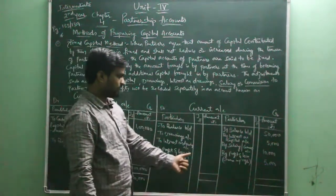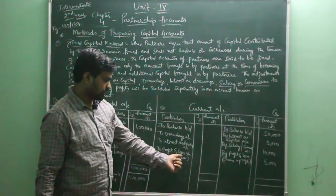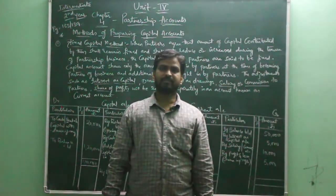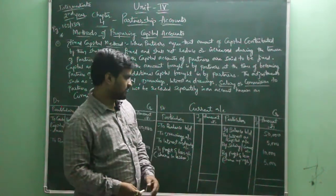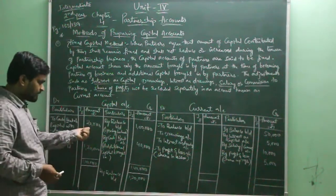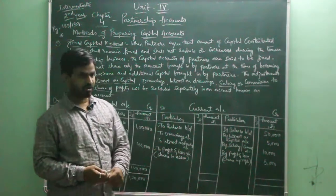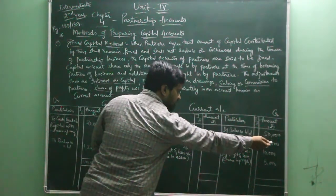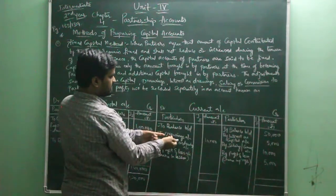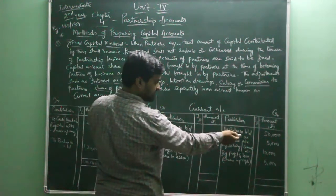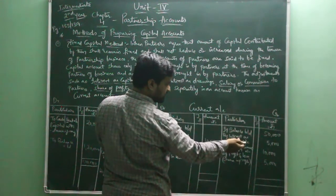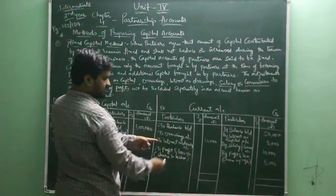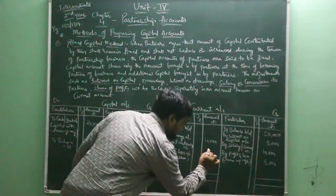On the debit side we have drawings and interest on drawings. Drawings is the amount which a partner has withdrawn from the business for his personal use. For example, he has withdrawn rupees 10,000 from the business. Just as the business pays interest on capital to the partner, when the partner withdraws the amount from the business, he is liable to pay interest on drawings to the business. For example, 10% interest on drawings of 10,000 will be rupees 1,000.